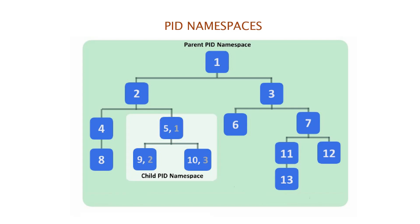PID namespaces can be nested. A process will have one PID for each of the layers of the hierarchy, starting from the PID namespace in which it resides through to the root PID namespace. A process can see only processes contained in its own PID namespace and the namespaces nested below it. Each PID namespace has its own /proc pseudo file system. One of the main benefits of PID namespaces is that containers can be migrated between hosts while keeping the same process IDs for the processes inside the container.